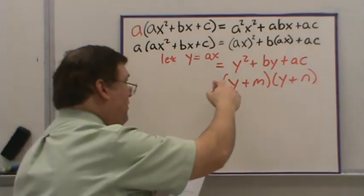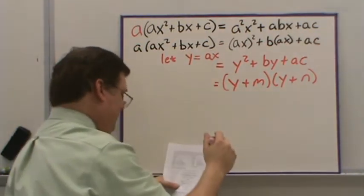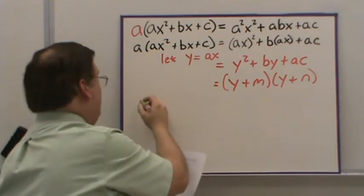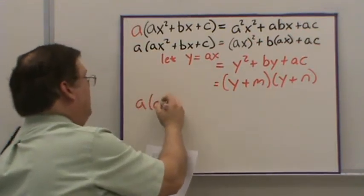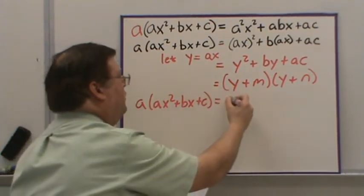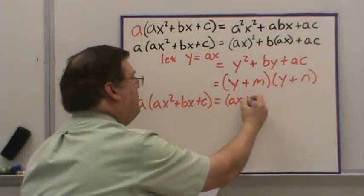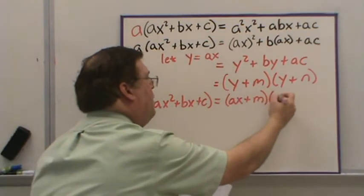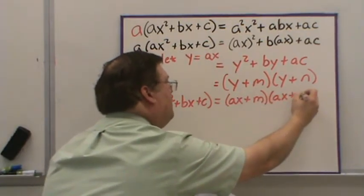So now I'm going to substitute back in the AX. At that point, I'm going to have A times AX squared plus BX plus C. That's going to be equal to AX plus the factor M and AX plus the factor N.